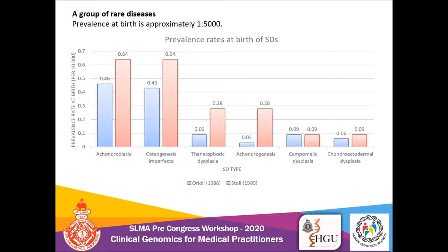Skeletal dysplasia are a group of rare diseases, however collectively they have a birth prevalence of one in five thousand births. When we look at prevalence rates at birth of different types of skeletal dysplasia, achondroplasia, osteogenesis imperfecta, and thanatophoric dysplasia are found to be more common than the rest of the disease entities.